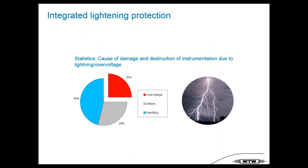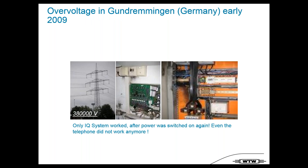One feature unique to measurement systems in our area is our integrated lightning protection. Statistics show around 25% of defective instruments are damaged by lightning and overvoltage. We have integrated protection for this. One real example from ten years ago in Germany: a high-power line dropped onto a wastewater treatment plant. Every digital system — telephone, PLC — was destroyed. Only IcoSensorNet worked when power was restored. It's real overvoltage protection inside.